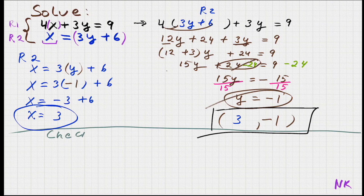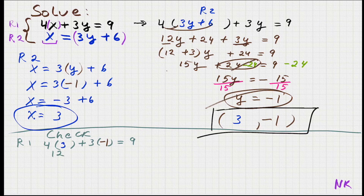You can always check by substituting the point back into the original equations. Let's check row 1: 4x plus 3y equals 9. With x equals 3 and y equals negative 1, we have 4 times 3 equals 12, and 3 times negative 1 equals negative 3. So 12 minus 3 equals 9 — and 9 equals 9. We have a true statement.